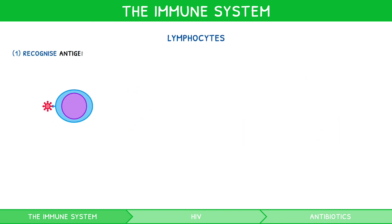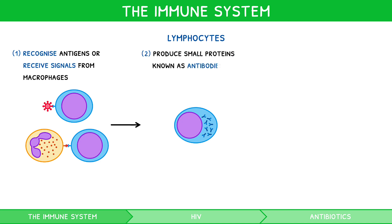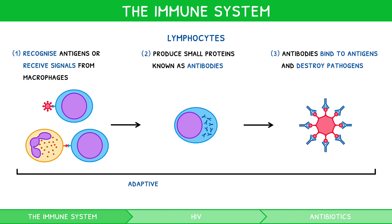Lymphocytes also recognise antigens and can also receive signals directly from macrophages. In either case, they produce small proteins known as antibodies, which bind to antigens and aid the destruction of pathogens through several mechanisms. This process is described as adaptive, i.e. learnt throughout life, and specific, as the antibodies produced are unique to the antigen encountered. For those studying IB biology higher level, we will cover pathogens and the innate and adaptive immune response in greater depth within our Topic 11 IB biology video series.